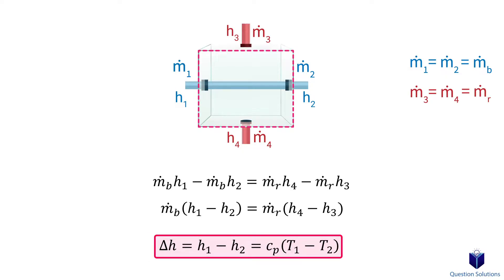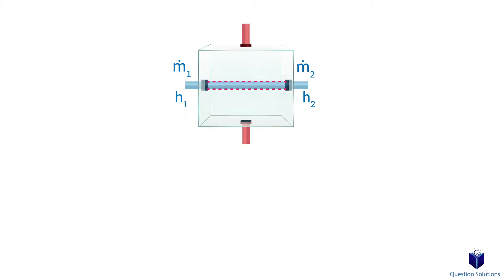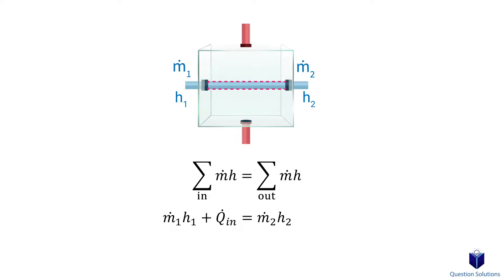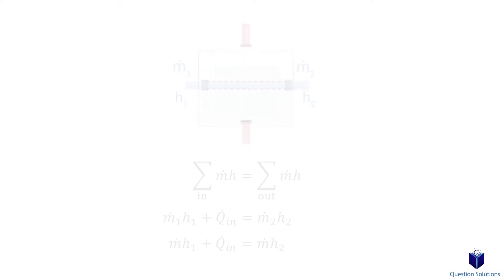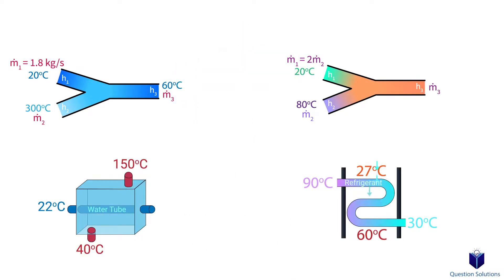What if we consider just one of the fluids to be our system? If we pick the blue pipe as the system, we have one input and one output, and we would also have a transfer of heat into the fluid — a heat input because heat from the red pipe fluid transfers to the blue pipe fluid. Mass flow is the same and can be represented as one variable. If we had selected the red pipe as the system, then there would be a heat loss. All of this will make more sense with examples, so let's get started.